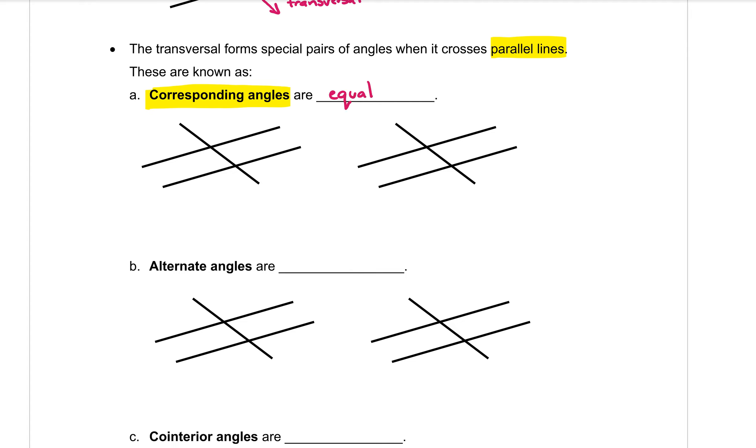Okay, now to help you identify when you have corresponding angles, you can remember that they always form an F shape. Now let me show you what that means. So here is my first set of parallel lines here and I have my transversal cutting it.